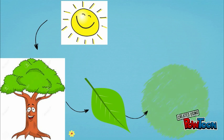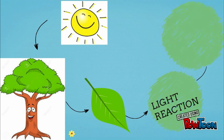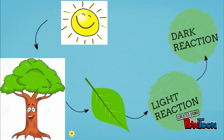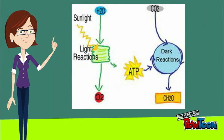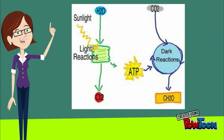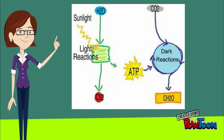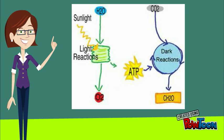Inside the chloroplast, light reaction and dark reaction occur, which completes the photosynthetic process. NADPH, ATP, and oxygen are the ultimate results of the light reaction. Those ATP and NADPH provide energy for the dark reaction.